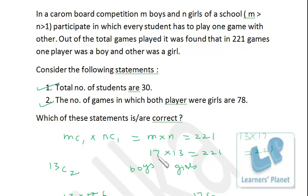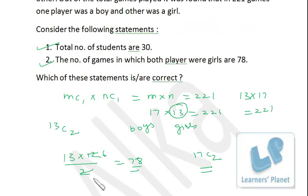We are just left with one combination that is 17 into 13 that produces 221. Obviously, M is greater than N. That means 17 boys will be there, 13 girls will be there. So in all, 30 students. So this statement is correct. If we have to find out in how many games both the players were girls, both the candidates should be chosen from 13. Since there are 13 girls, there are 13C2 combinations. So that comes up to 78.